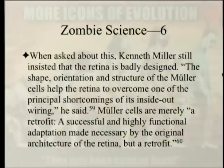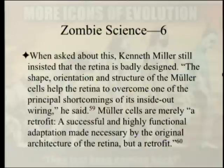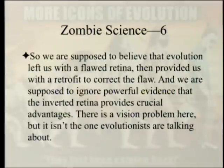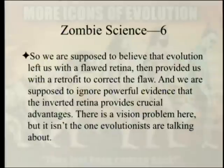When asked about this, Kenneth Miller still insisted the retina is badly designed, saying Mueller cells 'help the retina overcome one of the principal shortcomings of its inside-out wiring — they are merely a retrofit, a successful and highly functional adaptation made necessary by the original architecture of the retina, but a retrofit.' So we're supposed to believe that evolution left us with a flawed retina and then provided a retrofit to correct the flaw — while ignoring powerful evidence that the inverted retina provides crucial advantages. There is a vision problem here, but it isn't the one evolutionists are talking about.